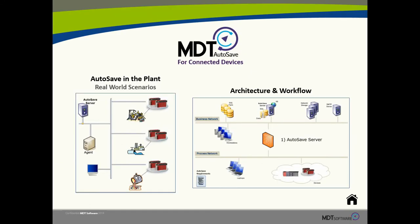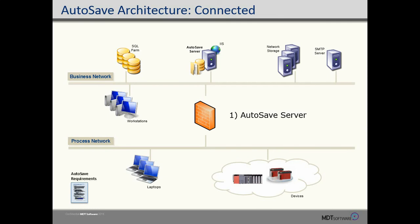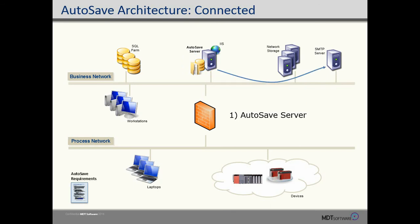Now let's look at the architecture and workflow of the product. Autosave is a client-server architecture. The Autosave server has IIS for reporting, Microsoft SQL Server, and a data store. The data store can be in network storage, SQL can be in a SQL farm, or they both can be local on the machine. We also recommend having a SQL management plan in place and keeping a copy of your data drive. It's also necessary to connect Autosave to an SMTP server to receive email notifications.